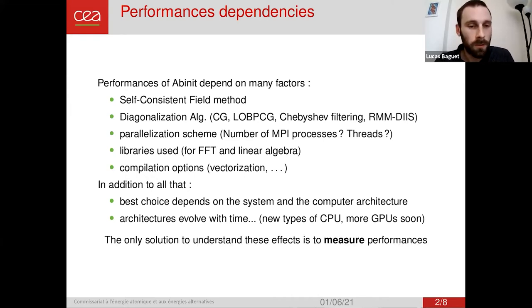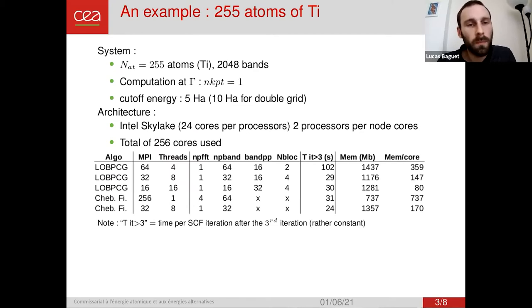So the only solution to understand all this effect is to measure performances intensively and regularly. So in the next slide, I'm going to show very few results in which we will compare LOB-PCG and the Chebyshev filtering algorithms with different parallelization schemes only. Okay, so the system under study is a set of 255 atoms of titanium with more than 2000 bands. So the computation is done at gamma only, and we use a rather low cutoff energy.